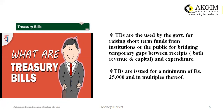Treasury bills are issued at a discount to their face value and are redeemed at par. The difference is the interest received by the holder, which in this case is known as the discount. For example, a treasury bill of 181 days with a face value of Rs. 50,000 will be issued at Rs. 45,000. If the holder holds it for the full 181 days, he will be repaid Rs. 50,000, and the difference of Rs. 5,000 will be the discount.